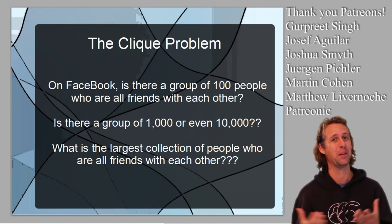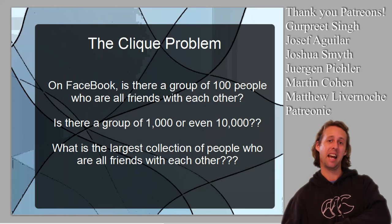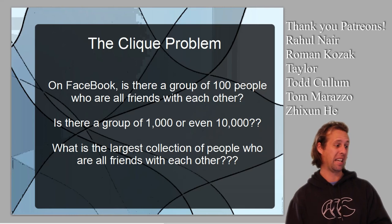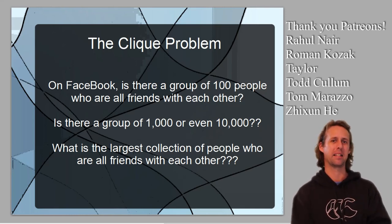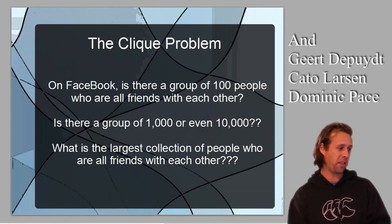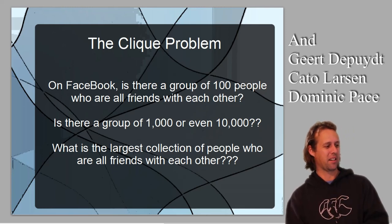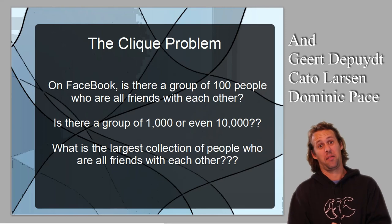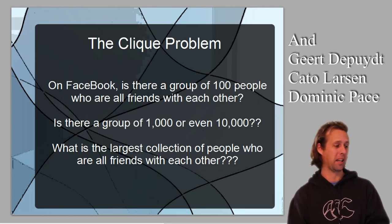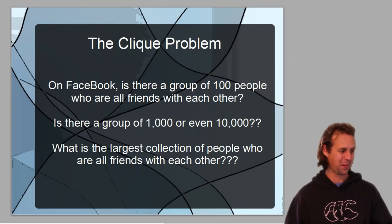If you consider everybody in the world as a network of Facebook friends, is there a group of 100 people that are all friends with each other? Is there a group of 1,000 people where everyone in that group is friends with everyone else in the group? Is there a group of 10,000? And really, one of the most interesting questions here is what is the largest collection of people on something like Facebook that are all friends with each other?